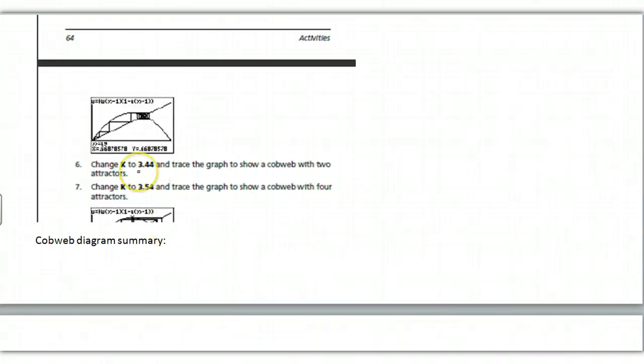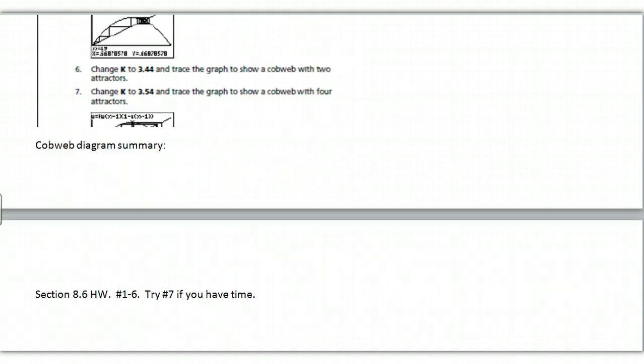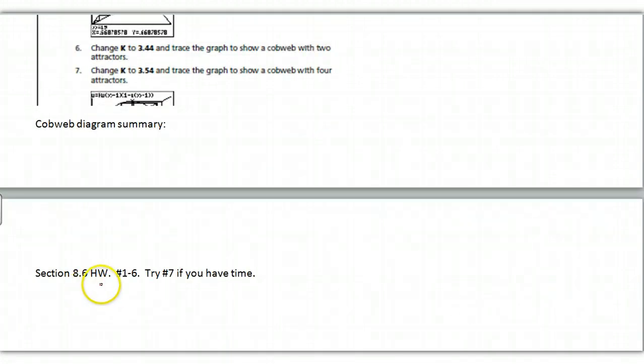So now it says go change K to 3.44 and then see what happens. And then 3.54 and see what happens. And I want you to summarize both of those and I'll check those in class next time. Okay. So I hope you enjoyed this. We'll talk about this. And then this is your homework for in class. Try number seven if you have time. I'm going to assume since you have most of the class to work you're going to have time for number seven. All right. Thank you.